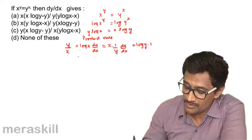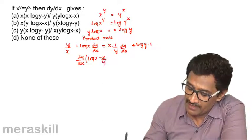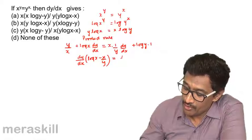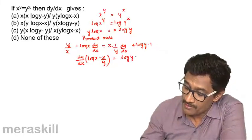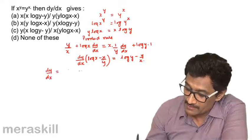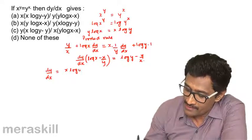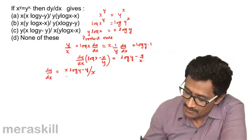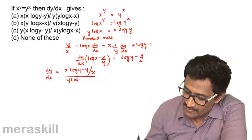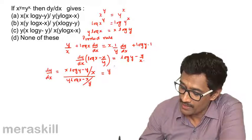Collecting all dy/dx terms together: dy/dx times (log x − x/y) equals log y − y/x. Therefore, dy/dx equals (x log y − y/x) divided by (y log x − x/y).